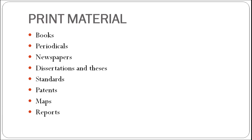Library materials or documents may be available in a variety of forms which include both the print and the non-print materials. The different kinds of print material are books, periodicals, newspapers, dissertations and theses, standards, patents, maps and reports.